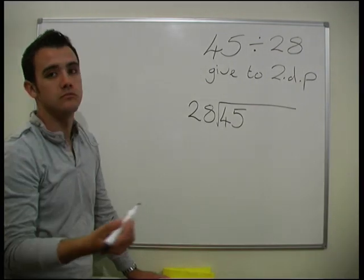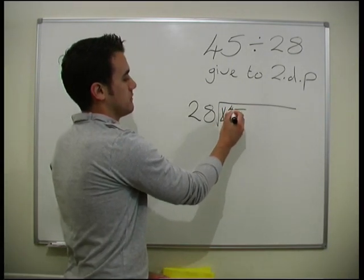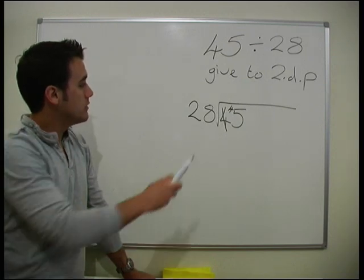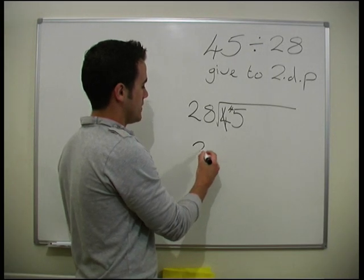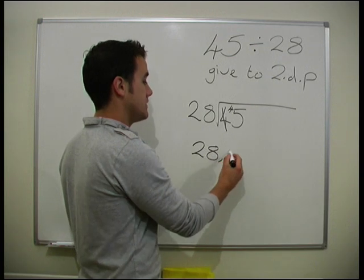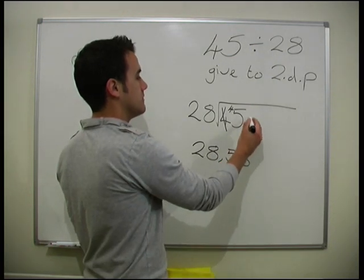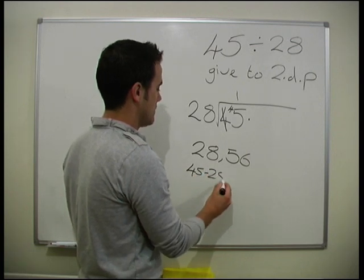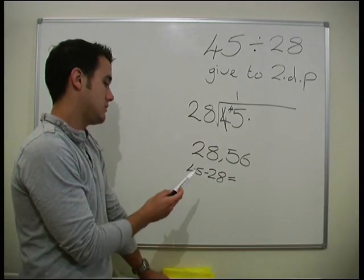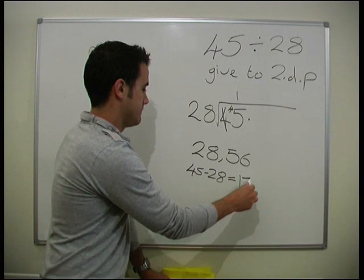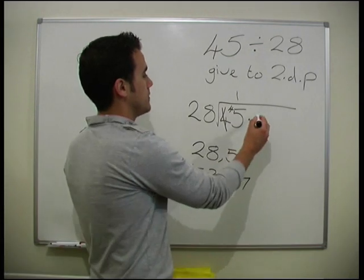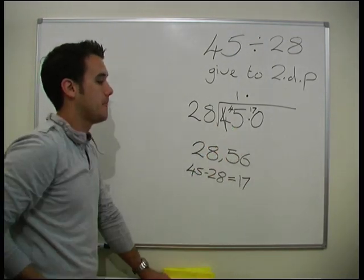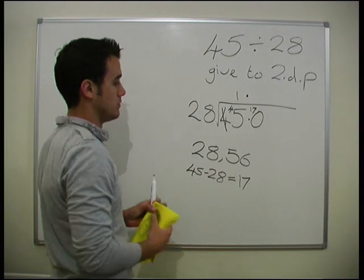How many 28s fit into 4? None, with a 4 left over. So we've got 45. How many 28s fit into 45? 2 × 28 is 56, so only 1 fits in. We've got a 1. How many have we got left over? We've got 28, so we need to do 45 take away 28, which gives us 17. So that means we've got a 0 here — don't forget the decimal place — and we've got 17. So we need to do 28 again all the way up to 170.